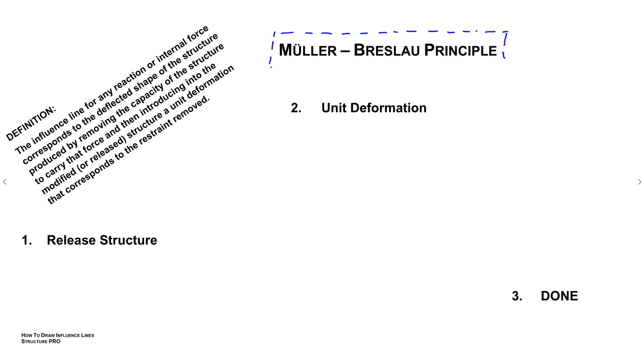Alright, so here is the chase. It's called the Müller-Breslau principle, okay? And it is fantastic. It's something that's going to allow us to create influence lines really quick. And it's got three steps, okay? Just three simple steps.